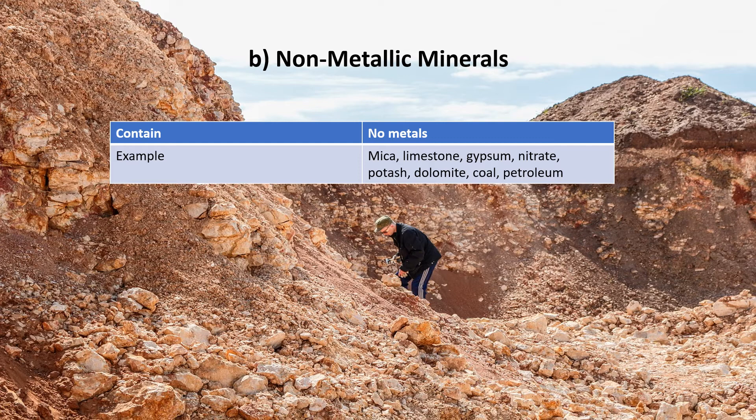Non-metallic minerals contain no metals. Examples are mica, limestone, gypsum, nitrate, potash, dolomite, coal, and petrol.